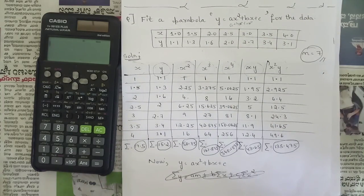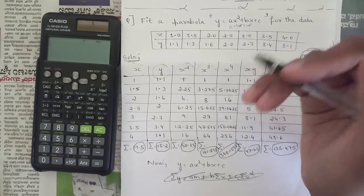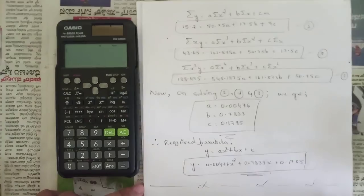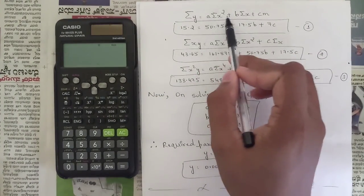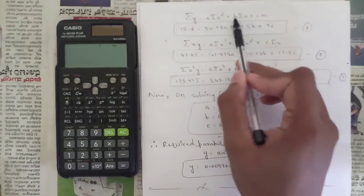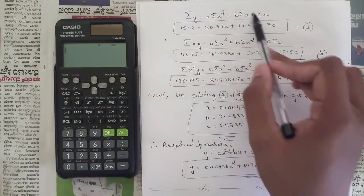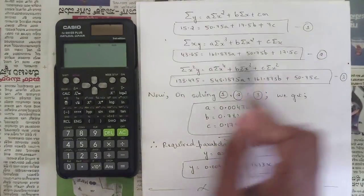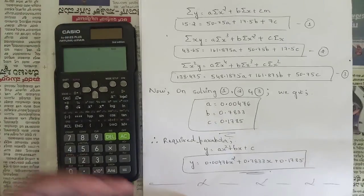Now substitute these summations into the three normal equations for the parabola. The first equation: summation y = a·summation x² + b·summation x + c·n, giving 15.2 = 50.75a + 17.5b + 7c. Similarly substitute into the other two equations to form a system of three equations.